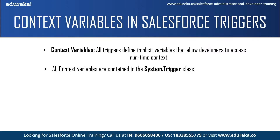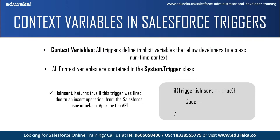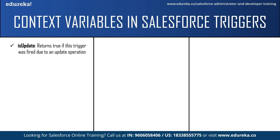Let us look at the list of context variables in Salesforce triggers. The first is isInsert — this returns true if the trigger was fired due to an insert operation. For example: if (Trigger.isInsert == true), only then will the set of code be executed. Next is isUpdate — this returns true if the trigger was fired due to an update operation. Then isDelete — this returns true if the trigger was fired due to a delete operation. After this is isBefore — this returns true if the trigger was fired before a record was saved to the database.